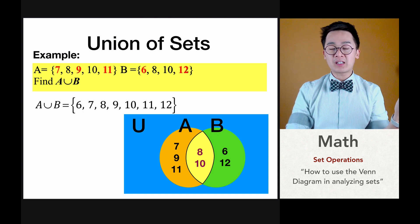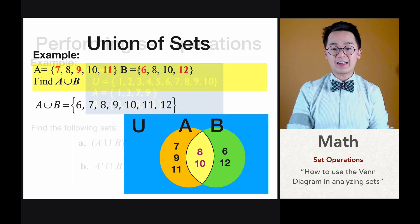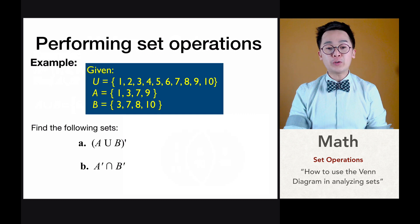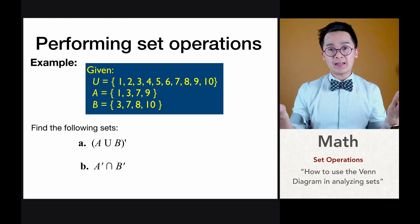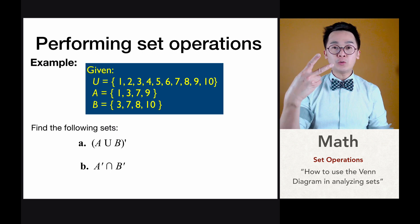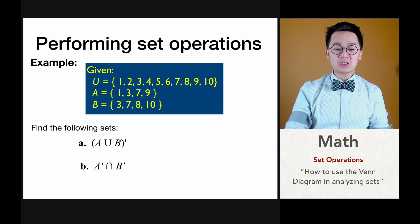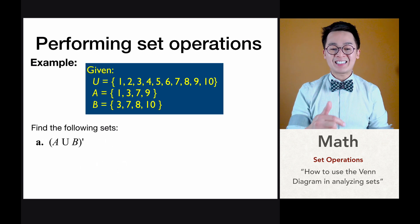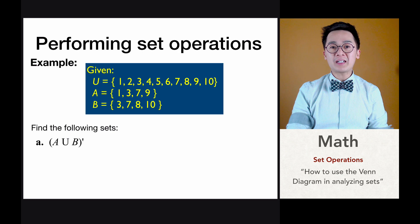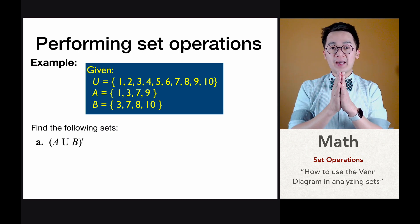Let's say we have union set U of 1 through 10 with two subsets: subset A which is 1, 3, 7, 9 and subset B which is 3, 7, 8 and 10. We want to find two results: letter A — the complement of A union B, and letter B — the intersection of complement of A and complement of B. Just like order of operations, we will work from the inside going outside.